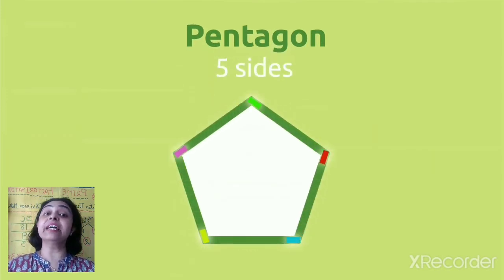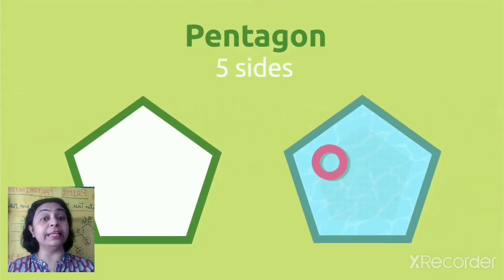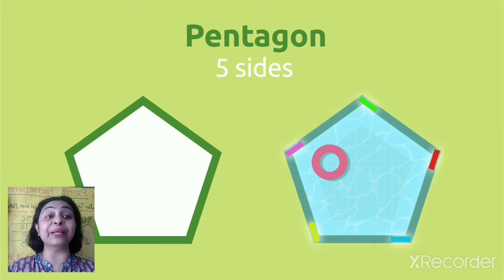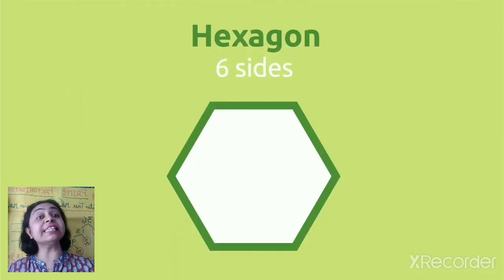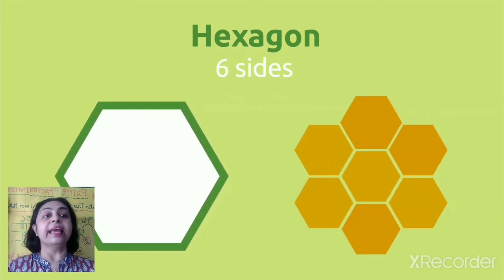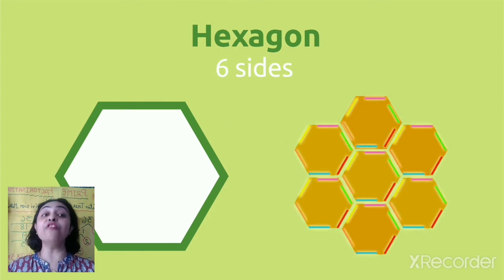Pentagon - if there are five sides, we call it pentagon. You can see the swimming is pentagon. Now hexagon - if there are six sides, we call it hexagon. Those are examples of hexagons.